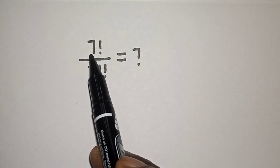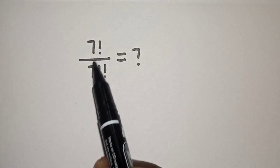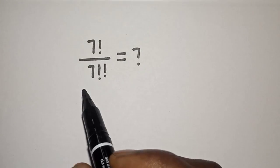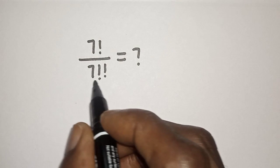Hi everyone, how to evaluate 7 factorial over 7 double factorial? Before you proceed, don't forget to like, share, comment, and subscribe.